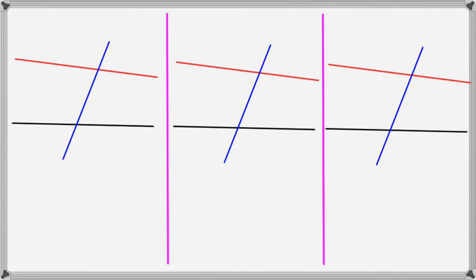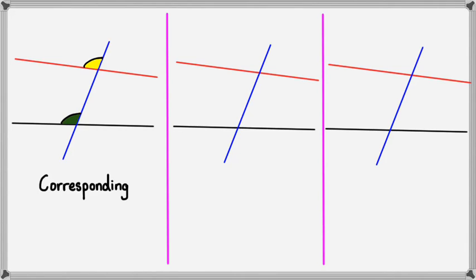The first one looks like this — we've got the yellow and green. You can see where they are: these two are known as corresponding angles. The next set is when you've got the green at the same area but then the yellow on the opposite end.